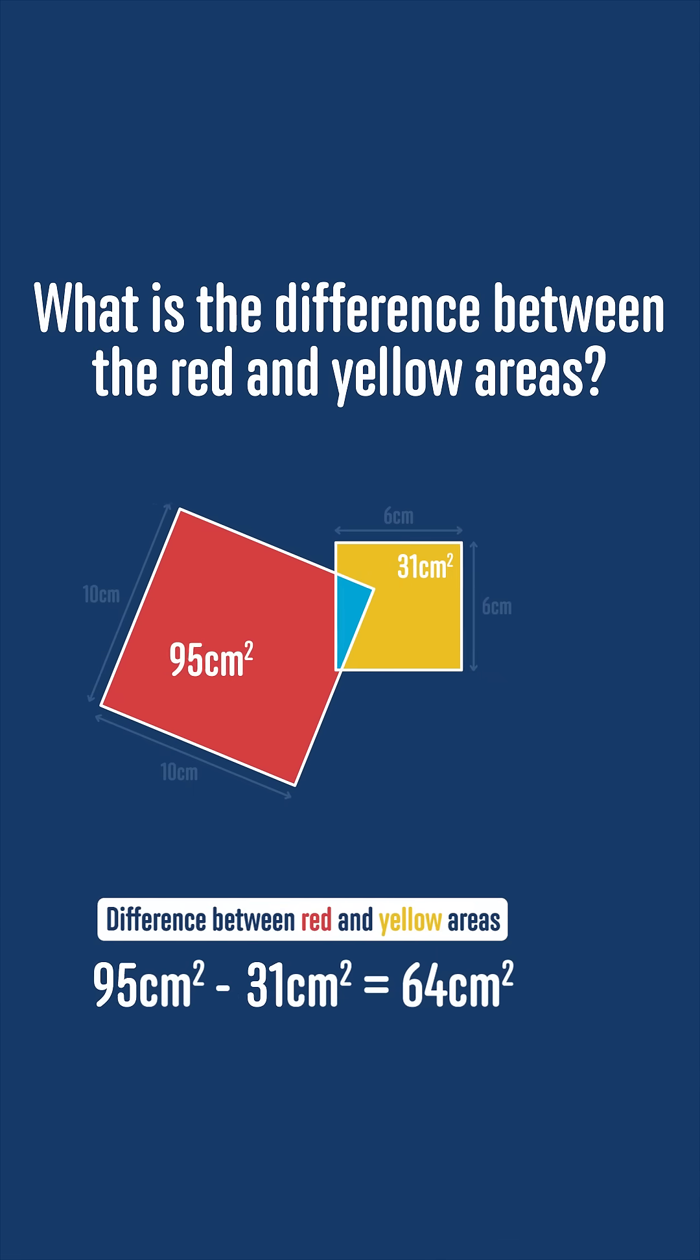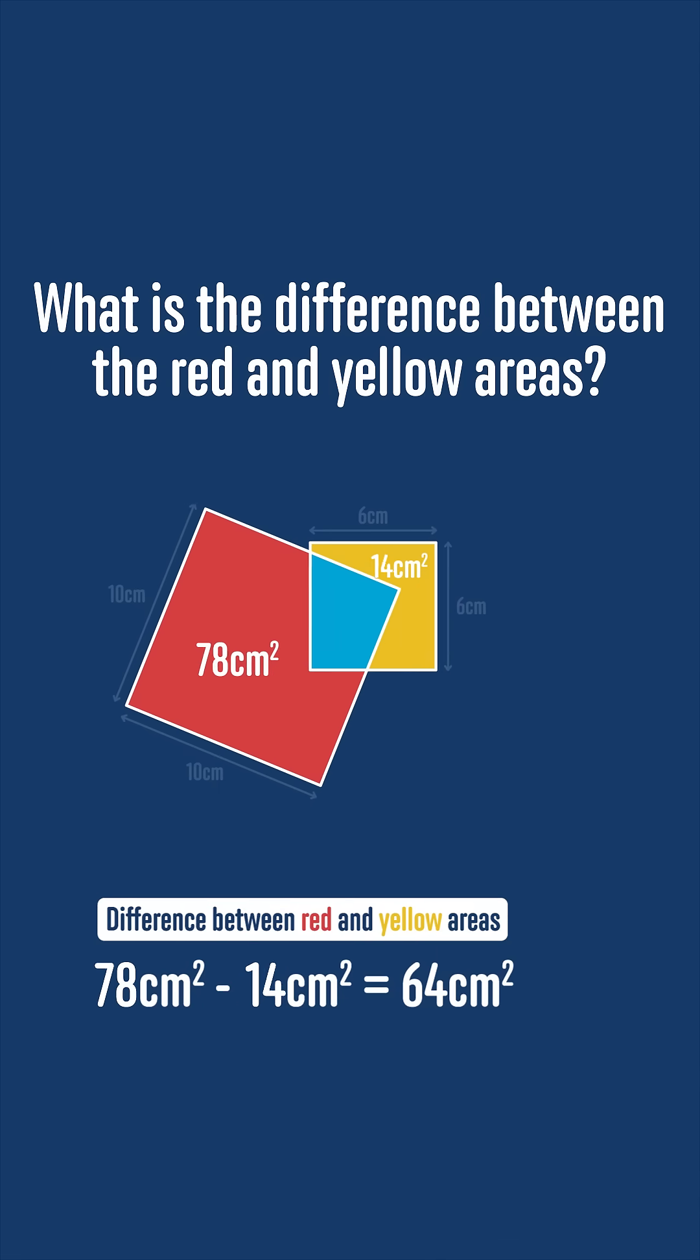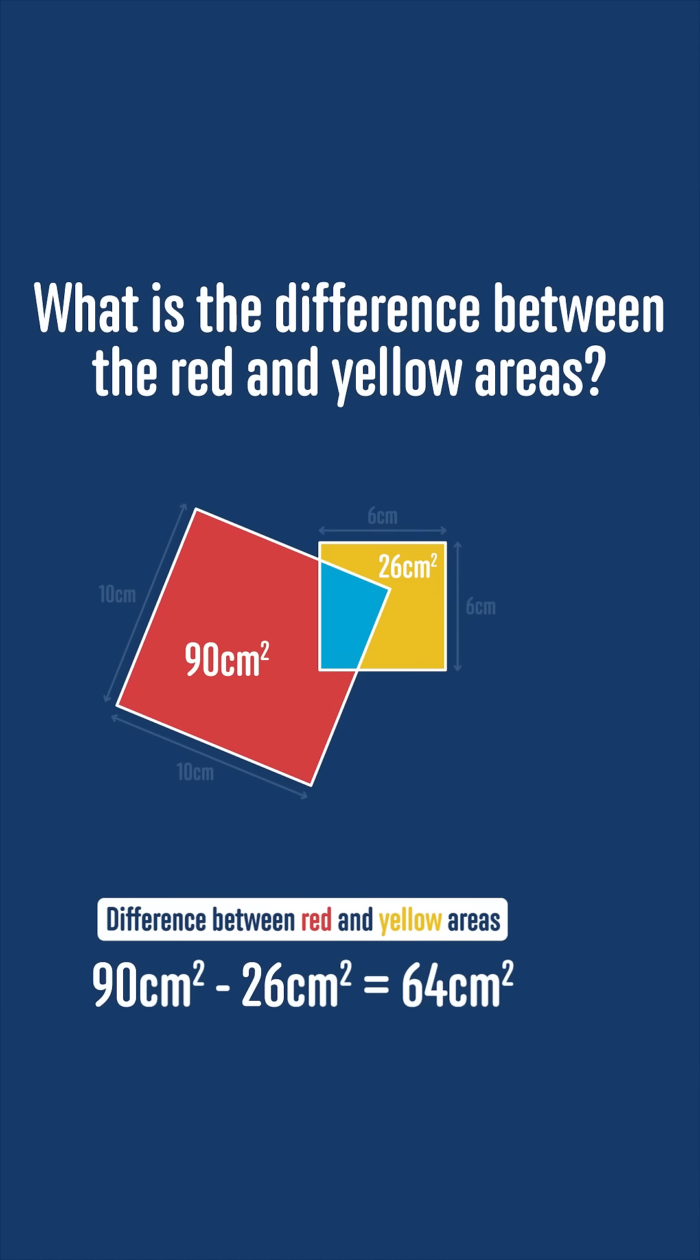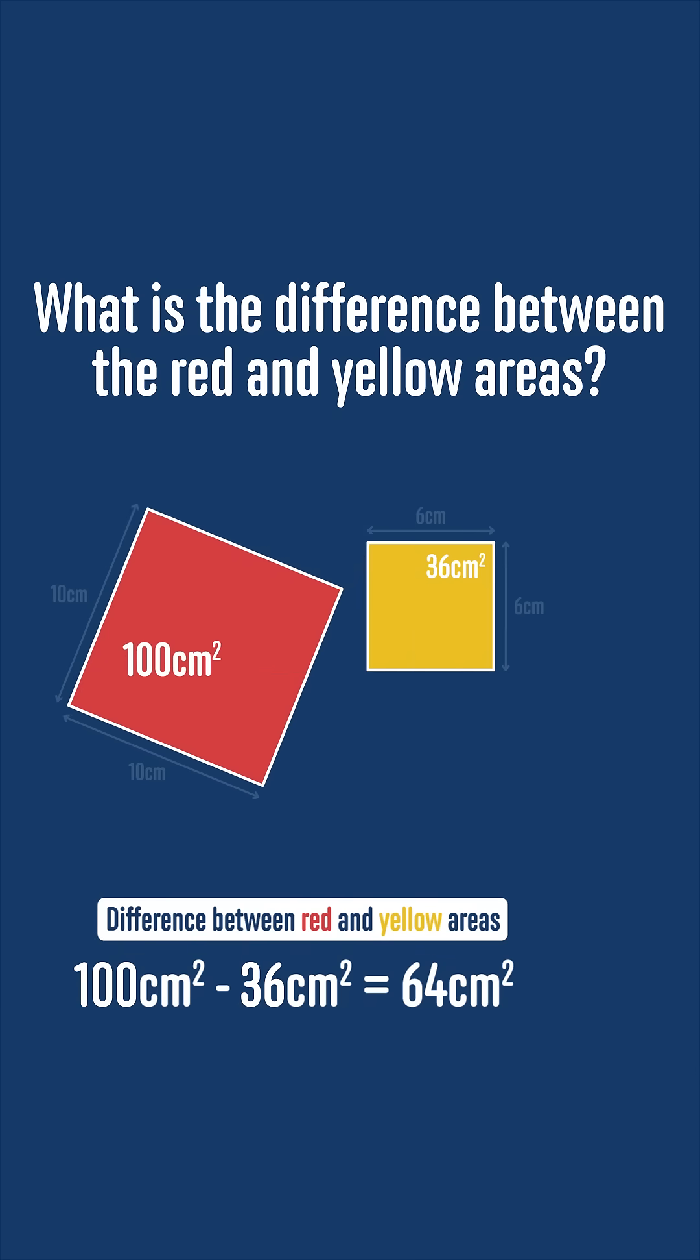But if we change the area of the overlap, the blue region, it doesn't change the final answer. The red area is 100 minus the blue area, and the yellow area is 36 minus the blue area. The difference between these will always be 100 minus 36, which is 64 centimeters squared, which is also the same answer that we would get if we separated the two large squares entirely, and there was no overlap at all.